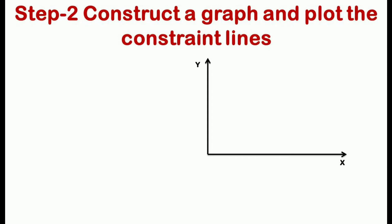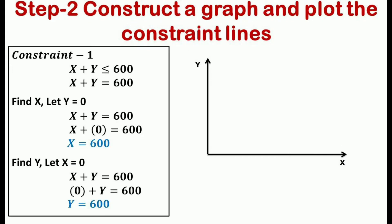Once the linear programming mathematical model is framed, the next step is to construct a graph and plot the constraint lines. Product x is taken along the horizontal axis and product y along the vertical axis. To plot the constraint lines, we replace the inequality sign in each constraint with an equality sign. For the first constraint, x + y ≤ 600 becomes x + y = 600.